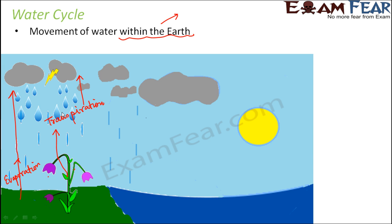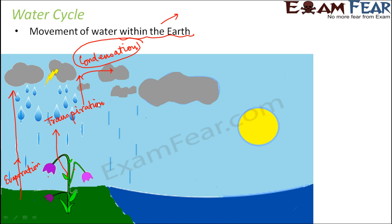All these water vapors condense to form clouds. This condensation happens at greater heights where the temperature is low enough for condensation to take place. As a result of condensation, cloud formation takes place. When the clouds become very heavy, they cause rainfall.